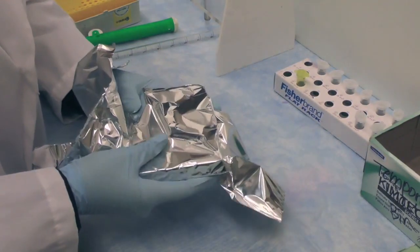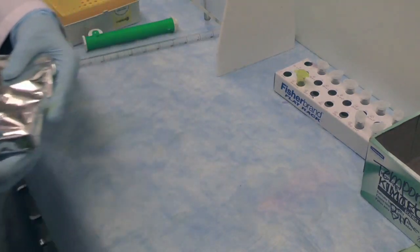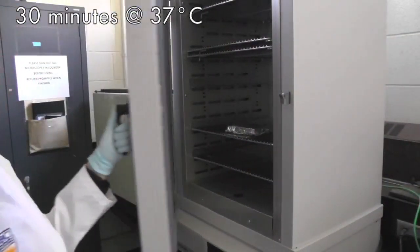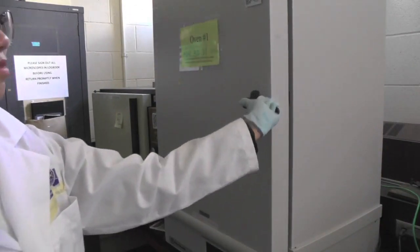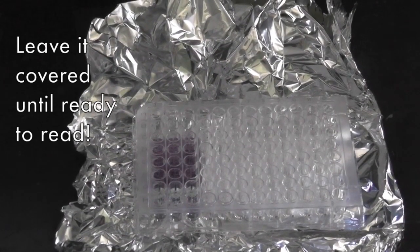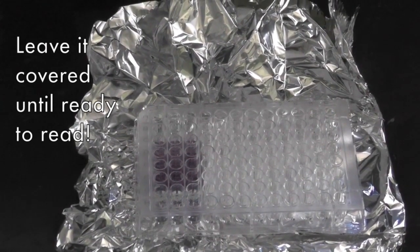Cover the plate with aluminum foil and place it in a 37 degree Celsius incubator for 30 minutes. After incubation, take the microplate out and cool to room temperature.